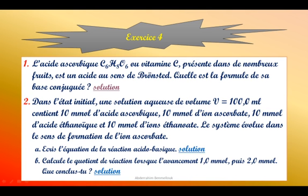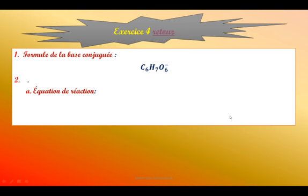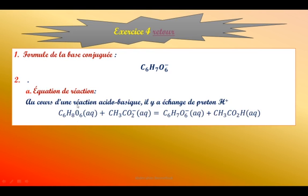Dans l'état initial, une solution aqueuse de volume V égal à 100 mL contient 10 mmol d'acide ascorbique, 10 mmol d'ion ascorbate, 10 mmol d'acide éthanoïque et 10 mmol d'ion éthanoate. Le système évolue dans le sens de la formation de l'ion ascorbate. Question 1 : écrire l'équation de la réaction acide-base. Au cours de la réaction, il y a transfert d'un proton de l'acide ascorbique vers l'ion éthanoate, ce qui donne l'ion ascorbate et l'acide éthanoïque.